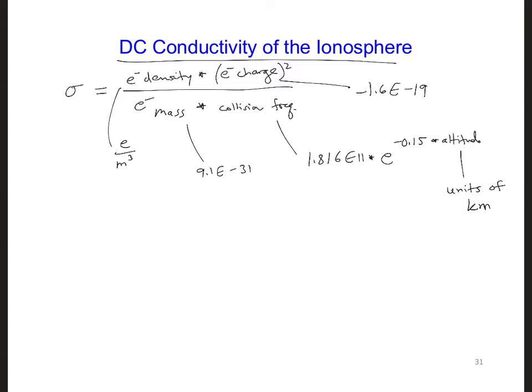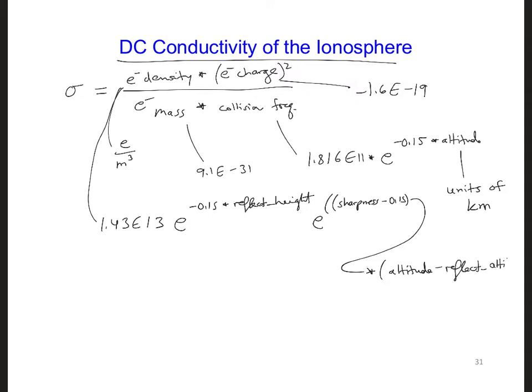And the altitude would have to be in units of kilometers. The electron density is 1.43 e to the 13 e to the minus 0.15 times the reflection height of the ionosphere, times another exponential, e to the sharpness of our profile minus 0.15, and I'm running out of room here. This would be multiplied times the altitude that we're at minus the reflection altitude. So this is a profile where the electron density increases exponentially as we go higher up into the ionosphere. And the sharpness here describes the sharpness of the profile.